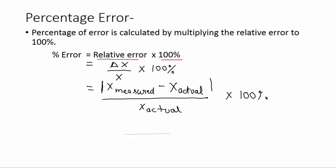Percentage error = (ΔX / X_actual) × 100%. We also plug in the value of ΔX: % Error = (|X_measured - X_actual| / X_actual) × 100%. This is the final equation of percentage error.